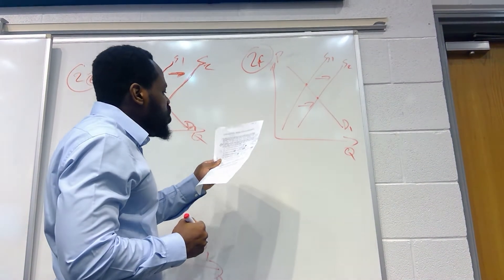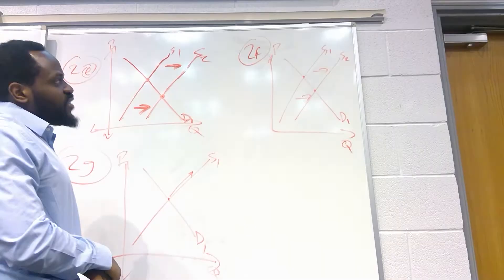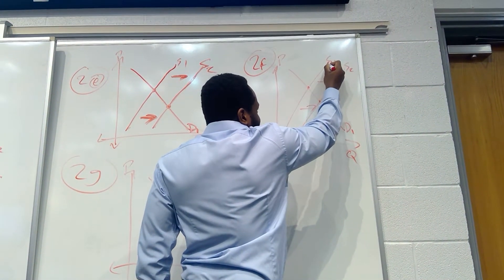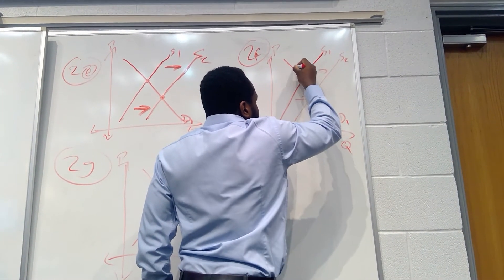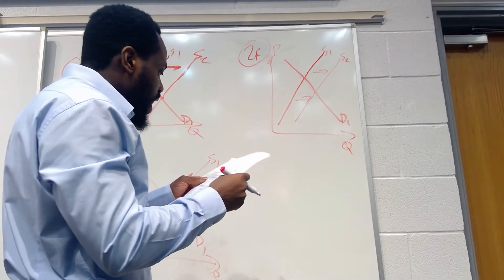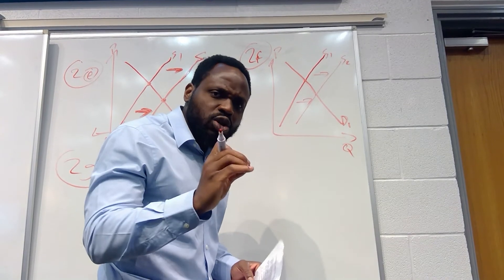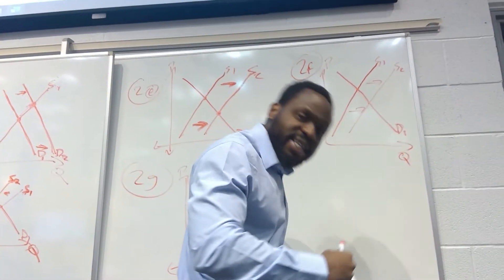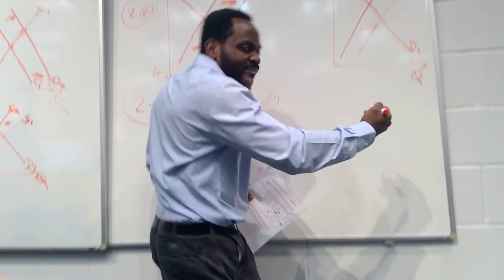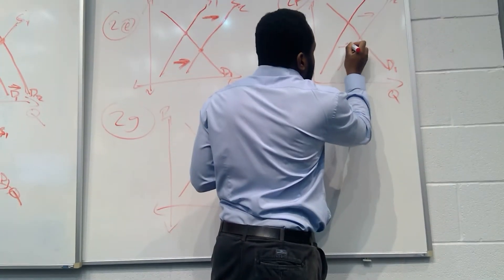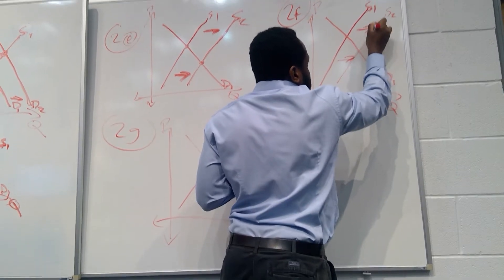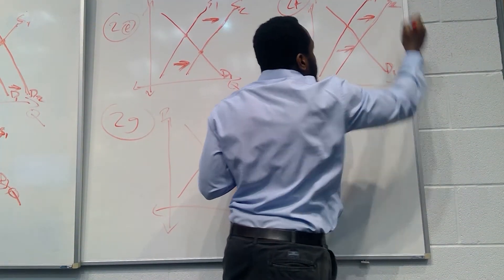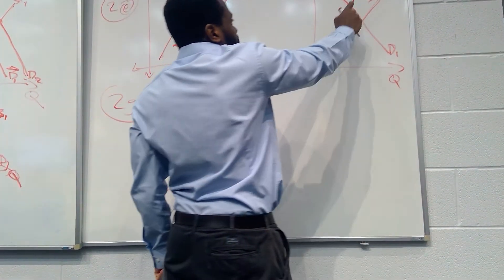Question 2f: new technology decreases the cost of refining oil — similar to what we said about mobile phones. We have our supply and demand for central heating oil. With new technology that reduces refining costs, at the same price we can produce more supply. So supply of oil increases. We're going to have a shift from S1 to S2 — a shift in supply to the right. At the same price, we have more quantity. That's our new equilibrium point.